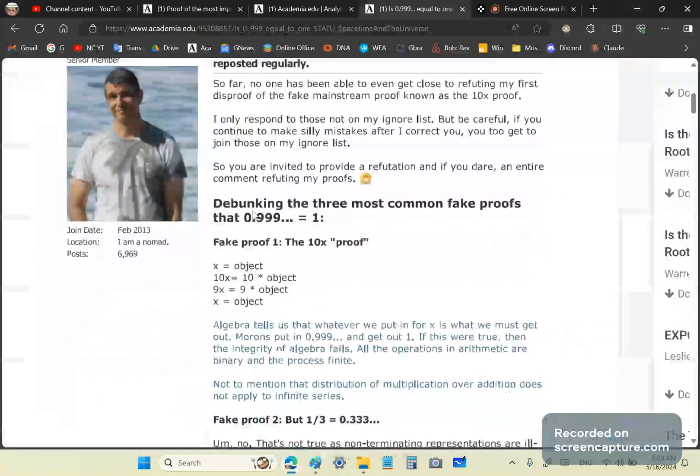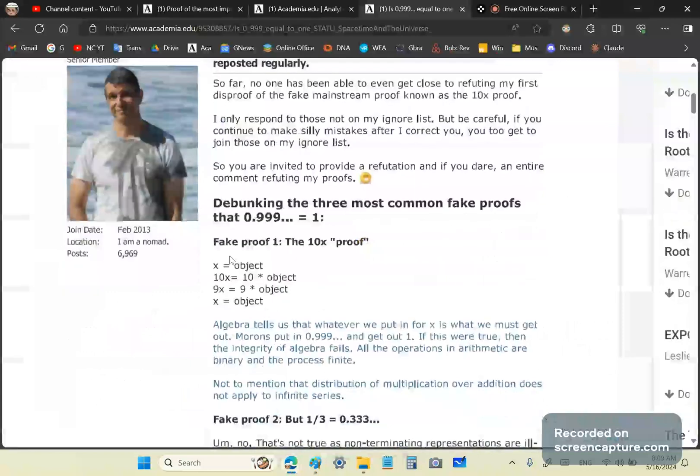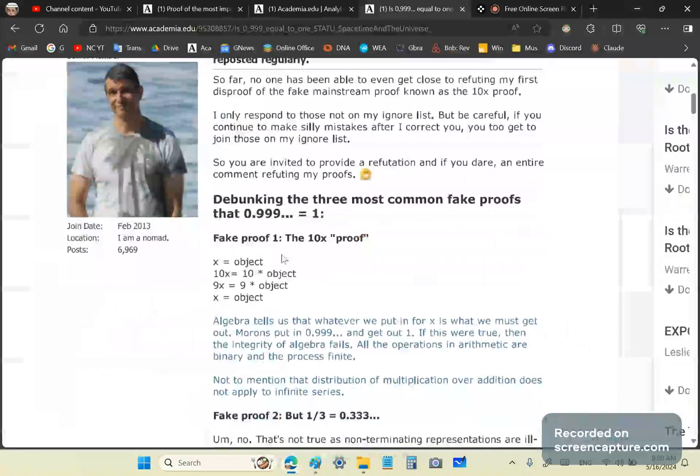So, the question to ask is not whether 0.999... is equal to 1, but whether it makes sense to define it as equal to 1. It doesn't. And there are three usual so-called fake proofs that are provided by the mainstream. There's this 10x proof, which is very easily debunked.